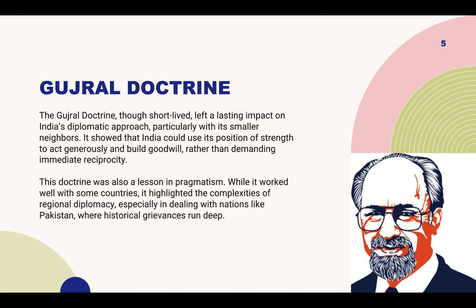However, this doctrine faced significant limitations in the case of Pakistan. While Gujral was committed to fostering peaceful relations, the history of conflict between India and Pakistan, particularly over Kashmir, made it difficult for the doctrine to achieve lasting success here. India offered numerous goodwill gestures, including unilateral concessions, but Pakistan's response was often lukewarm, largely due to its strategic interests and military focus.